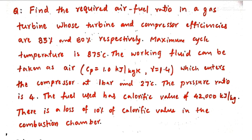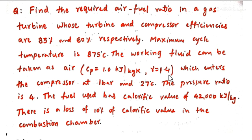We are seeing a problem from the topic of gas turbines. Find the required air-fuel ratio in a gas turbine whose turbine and compressor efficiencies are 85% and 80% respectively. Maximum cycle temperature is 875 degrees centigrade. The working fluid can be taken as air, for which Cp is 1.0 kJ/kg·K and gamma is 1.4, which enters the compressor at 1 bar and 27 degrees centigrade. The pressure ratio is 4, and the fuel used has a calorific value of 42,000 kJ/kg. There is a loss of 10% of calorific value in the combustion chamber.